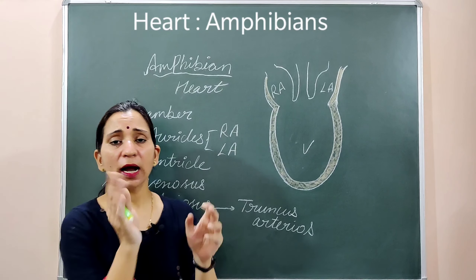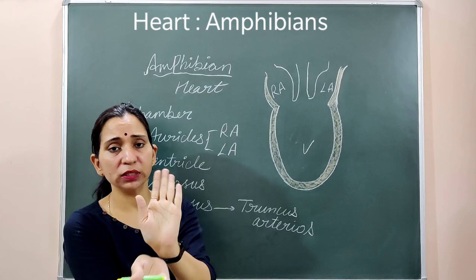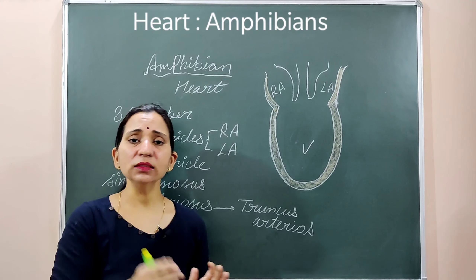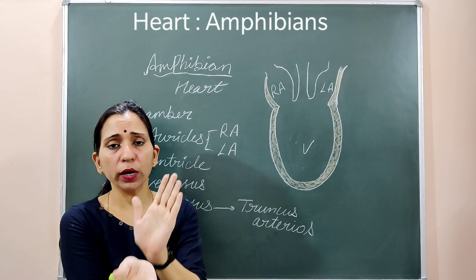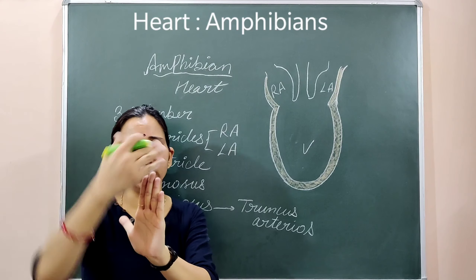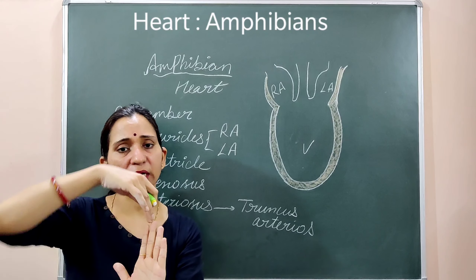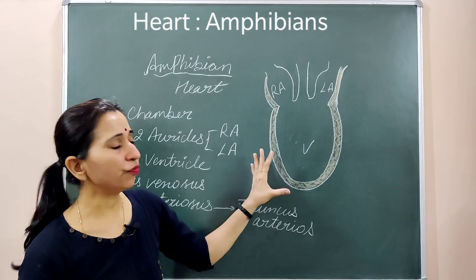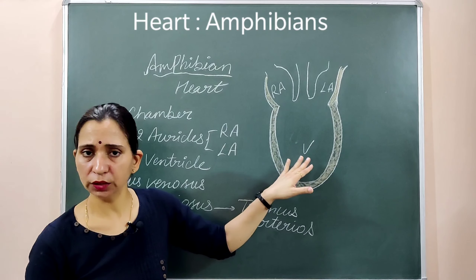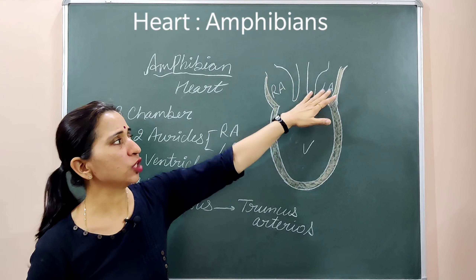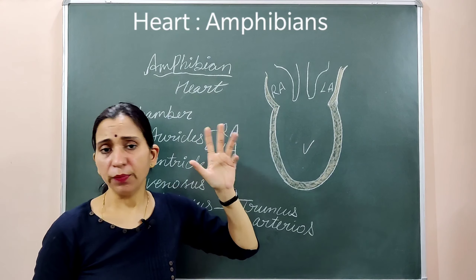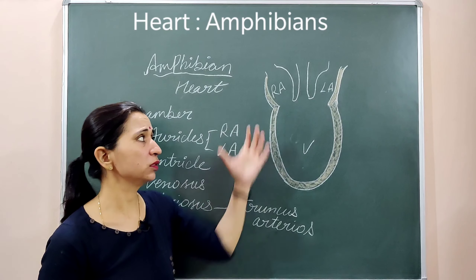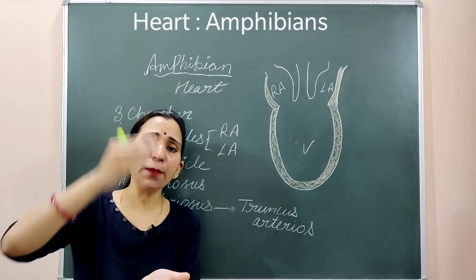In the fish heart, which was a tubular heart, the atrium was present at the lower side and the ventricle at the upper side. But as evolution takes place, the atria come to the upper side and the ventricles remain at the lower side. So in amphibians, the lower chambers are the ventricles and the upper chambers are the atria.